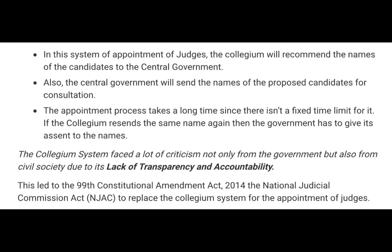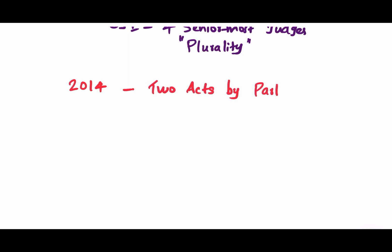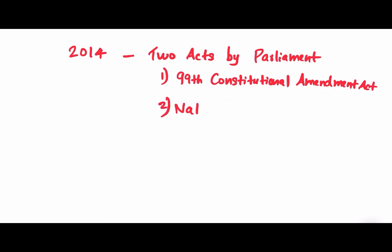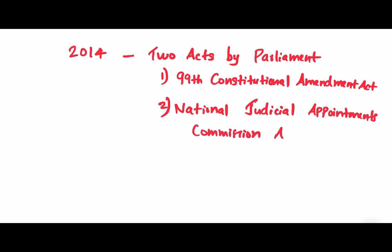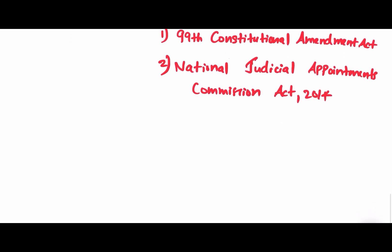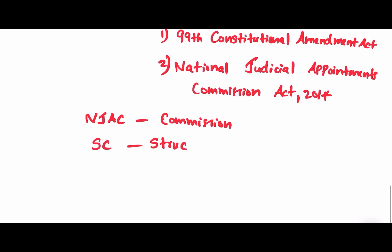This led Parliament to pass the 99th Constitutional Amendment Act 2014 and the National Judicial Appointments Commission Act (NJAC Act) to replace the collegium system for the appointment and transfer of judges. However, this attempt to replace the collegium system with the National Judicial Appointments Commission was struck down by the Supreme Court in 2015, restoring the old collegium system.